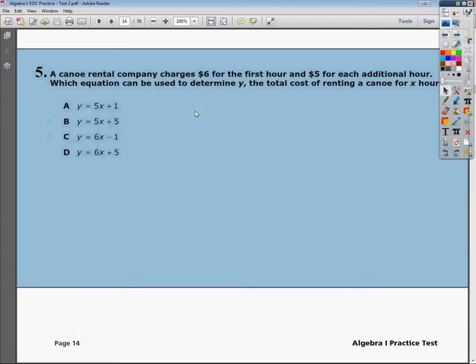Welcome, this is the Tennessee End of Course Practice Test for Algebra 1. This is End of Course Practice Test 2. Question number 5. A canoe rental company charges $6 for the first hour, and $5 for each additional hour. Which equation can be used to determine the total cost of renting the canoe for X hours?